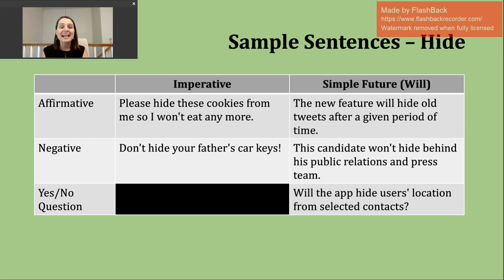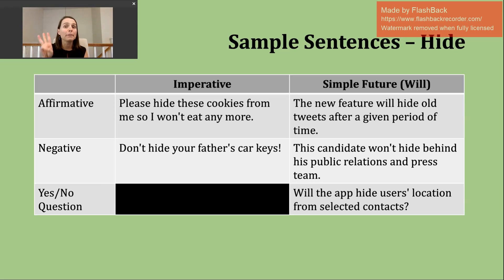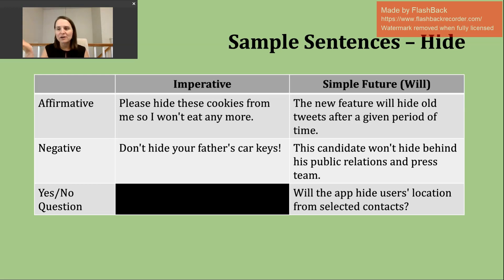Now let's take a look at our verb of the day, hide, in a few different verb tenses. Today we're going to focus on the imperative and the simple future using will. The imperative is a command. It's unique in English because there is no stated subject — the subject is implied and it's either you singular or you plural. We are telling someone either to do the action or not to do a particular action. This is different from suggesting or giving advice; here we are commanding someone to do something. Think of parents talking to their children or teachers talking to their students — the imperative is used often.